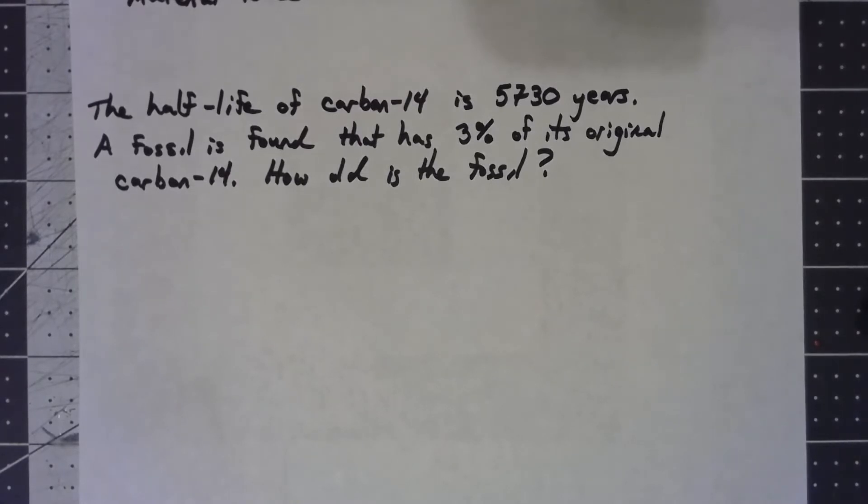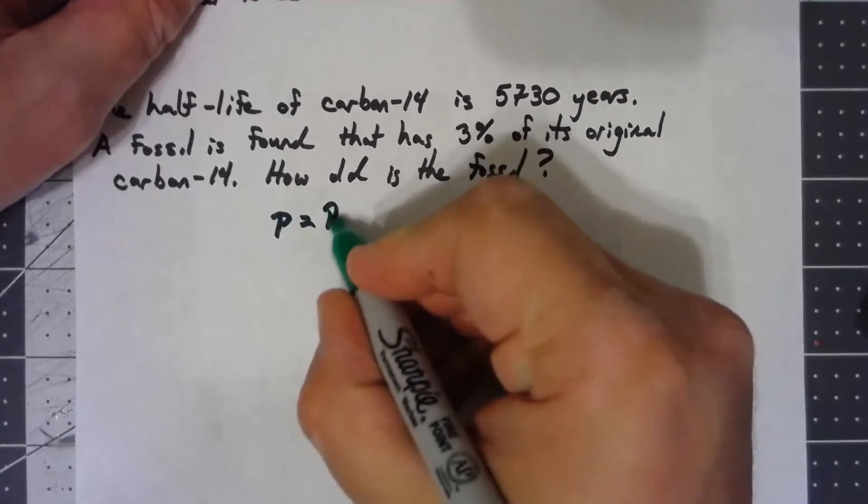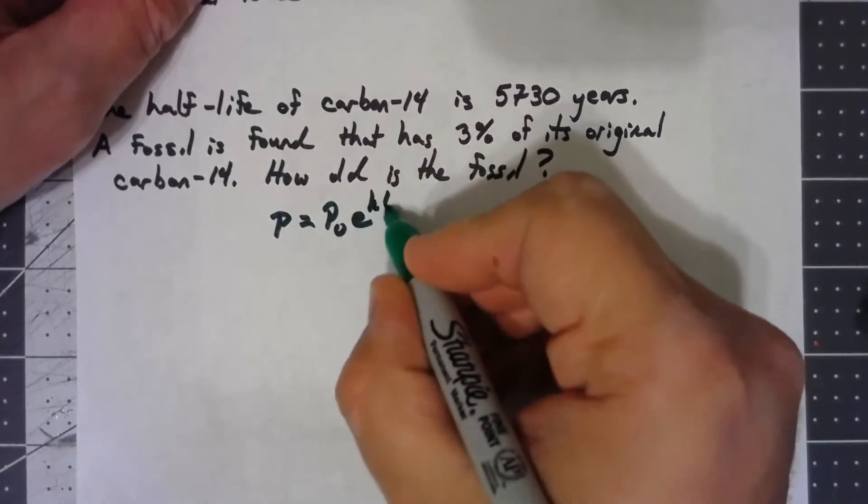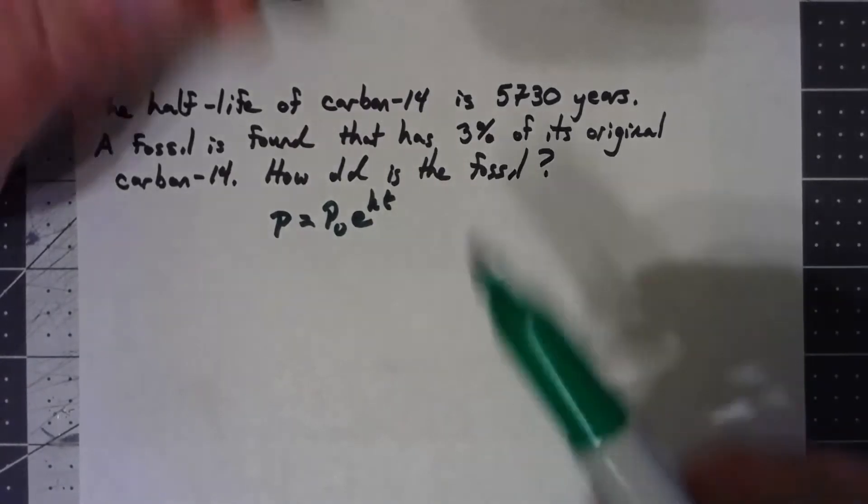Just like in the other problem, we're going to go ahead and we need to figure out what the K is in the P equals P₀e^(kt).